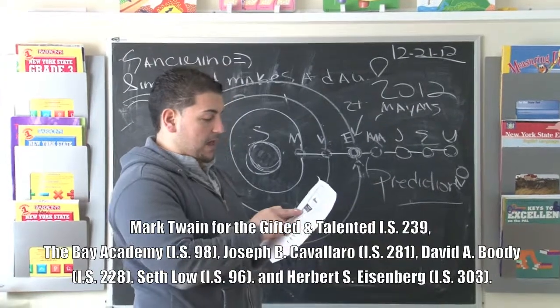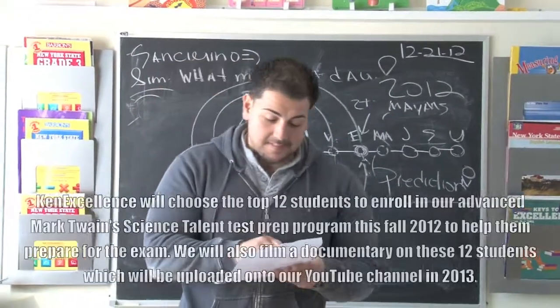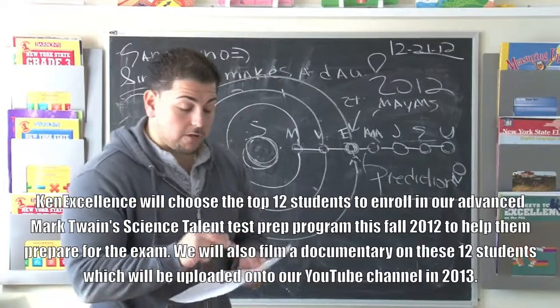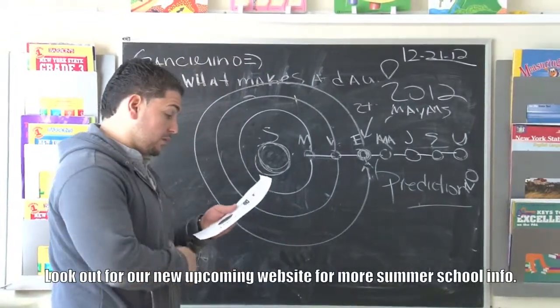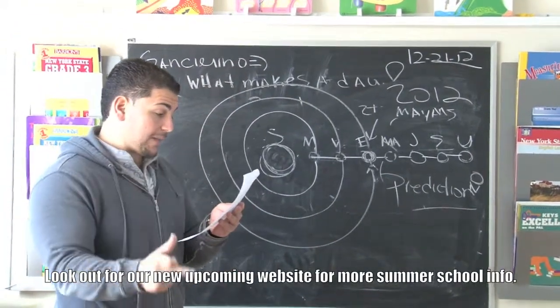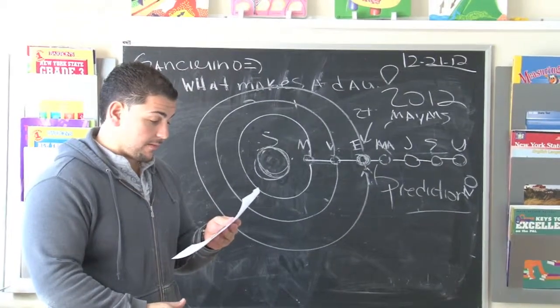Let's go to Mercury. It says day equals time for a complete spin around there. So in order for Mercury to go around, a complete spin, it takes how long?